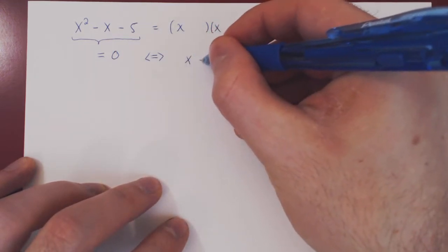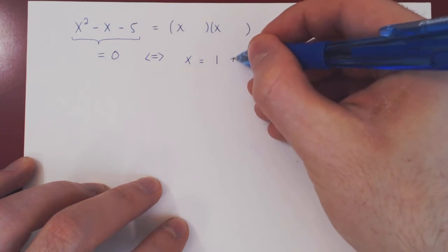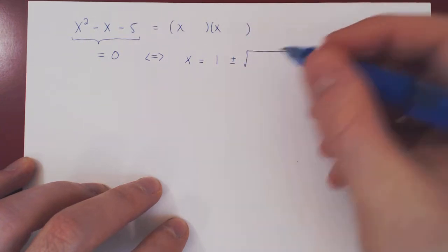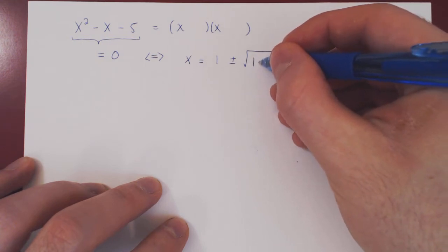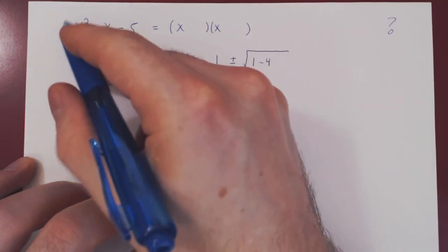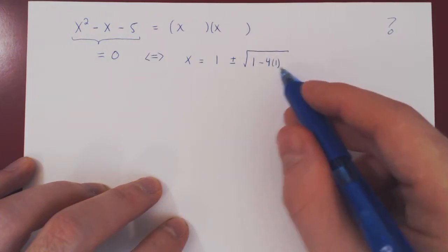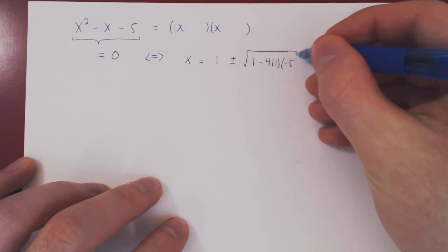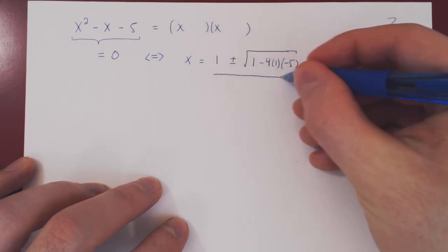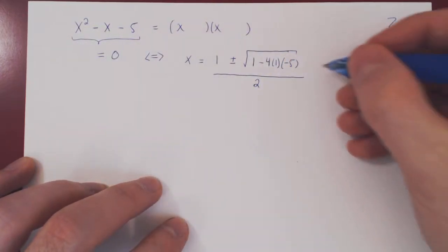So, x must be minus b, negative negative 1 is plus 1, plus or minus b squared, negative 1 squared is 1, minus 4 times a, which is 1, minus 4ac of course, which is negative 5, all over, if you remember, 2 times a, 2 times 1 is 2.